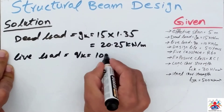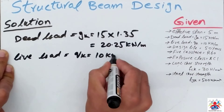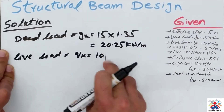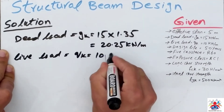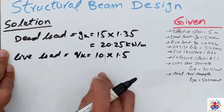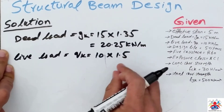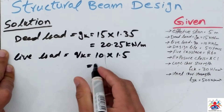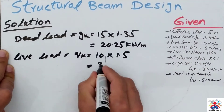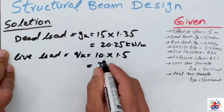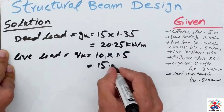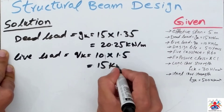Then we have the live load Qk of 10 kilonewtons, multiplied by 1.5 — this is the live load factor — and we get 15 kilonewtons per meter.